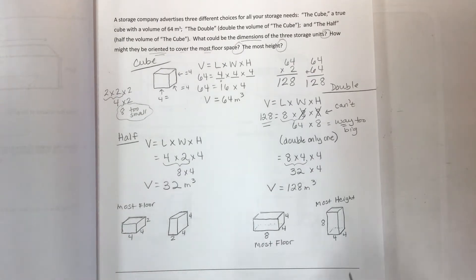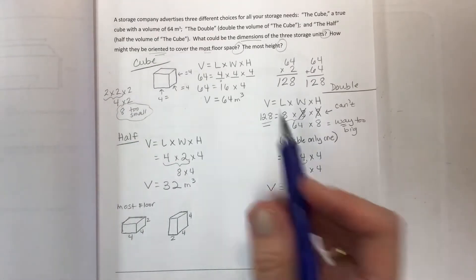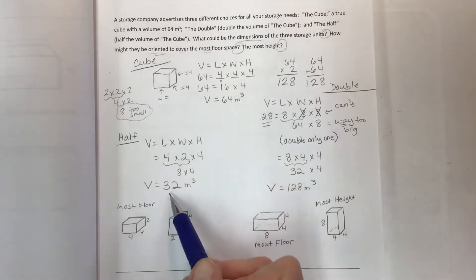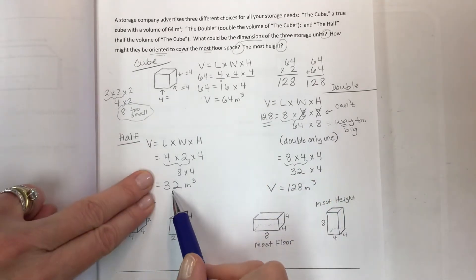You have to have a certain volume. So if you're using the half and you've got 32, can you have a figure with dimensions 1 by 1 by 32? And the answer is yes, yes you can.